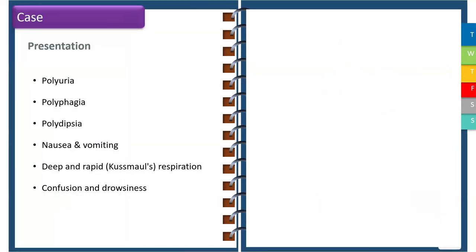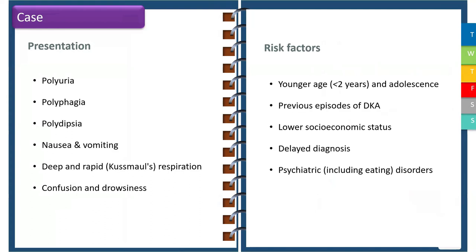These children commonly present with polyuria, polyphagia, polydipsia, nausea and vomiting, deep and rapid Kussmaul respiration, confusion, and drowsiness. Common risk factors include younger age of presentation, the adolescent age group, previous episodes of DKA, low socioeconomic status, delayed diagnosis, and certain psychiatric disorders.